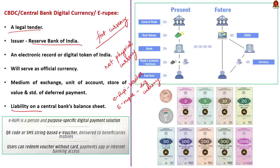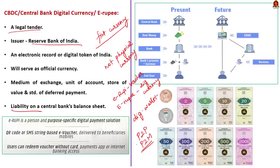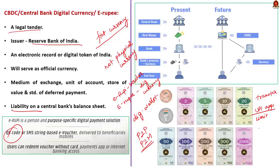E-Rupee will be issued in the same denomination as paper currency and will be distributed through intermediaries, that is banks. Transactions will be through a digital wallet offered by participating banks. The currencies can be stored on mobile phones and devices. Transactions can be both person-to-person (P2P) and person-to-merchant (P2M). For P2M transactions such as shopping, there will be QR codes at the merchant location. A user will be able to withdraw digital tokens from banks the same way she can currently withdraw physical cash, keep them in a wallet and spend them online, in person, or transfer them via an app. While UPI-based apps like Google Pay have daily transaction spending limits, the RBI has not fixed any limit on holding digital rupees in wallets.